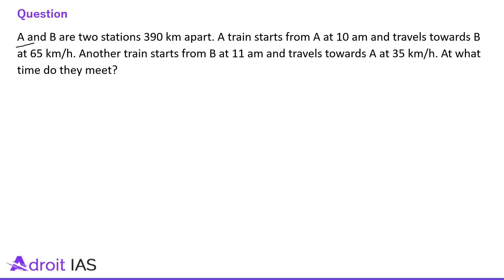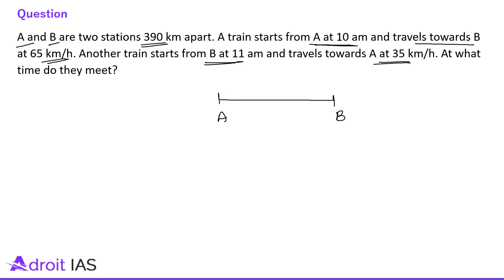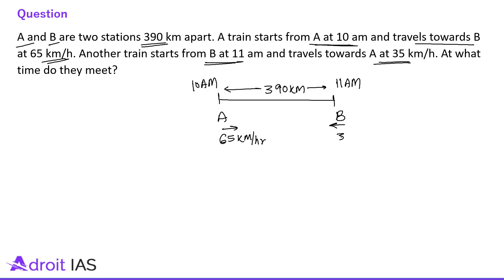Question 4: A and B are two stations 390 km apart. A train starts from A at 10 AM and travels towards B at 65 km per hour. Another train starts from B at 11 AM and travels towards A at 35 km per hour. At what time do they meet? From 10 AM to 11 AM, only the first train is moving at 65 km per hour, so in one hour it covers 65 km.